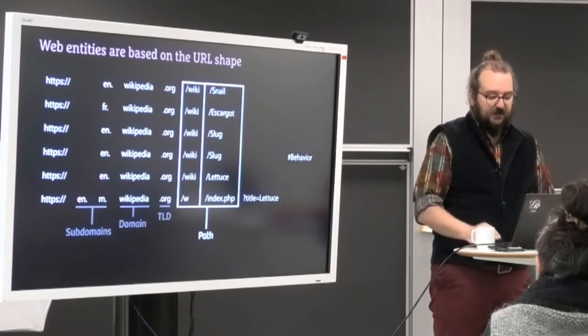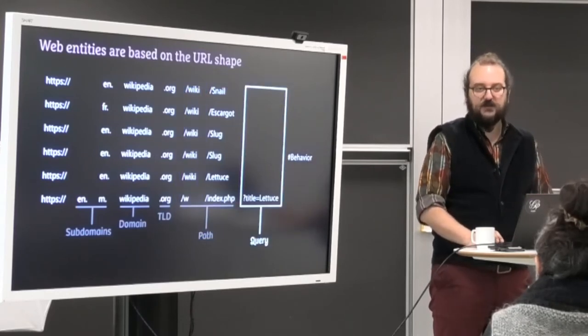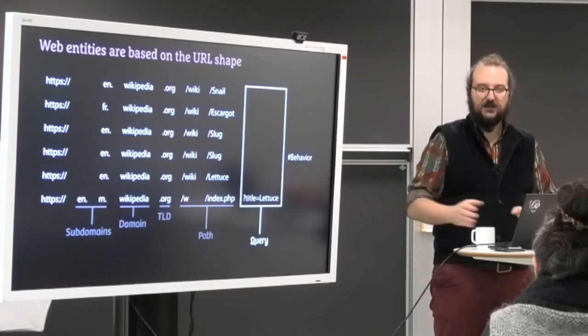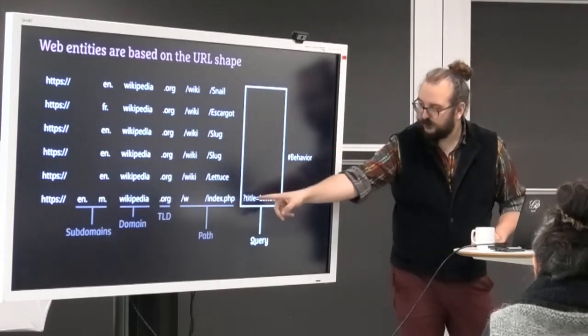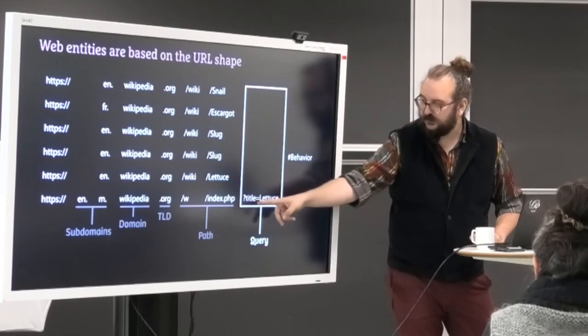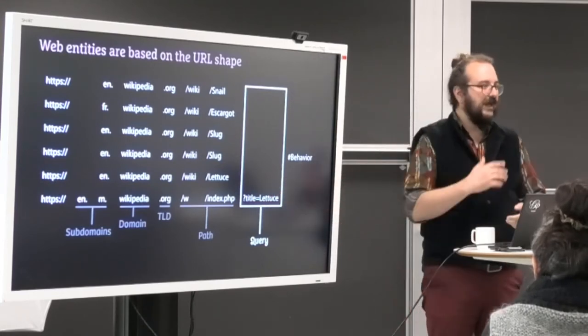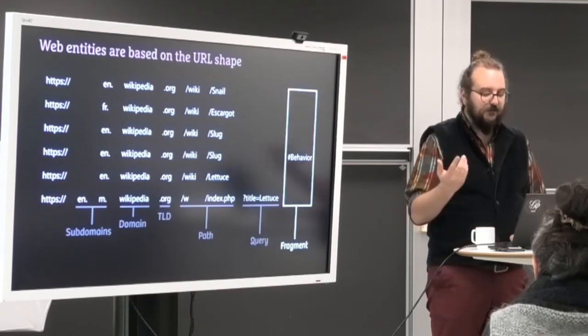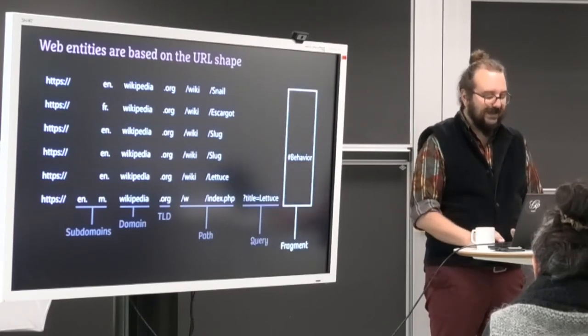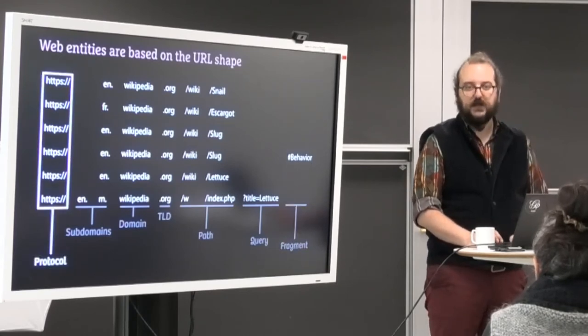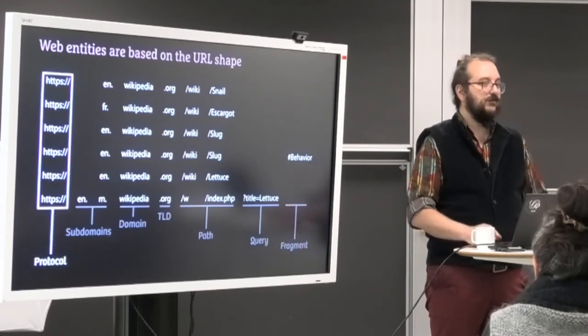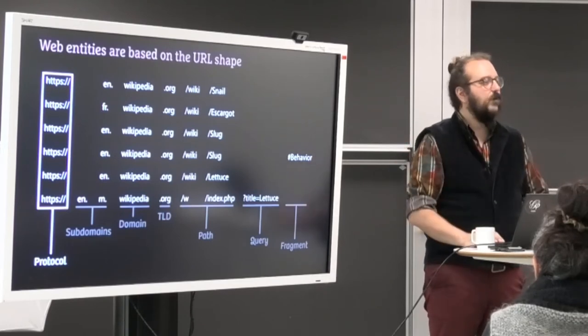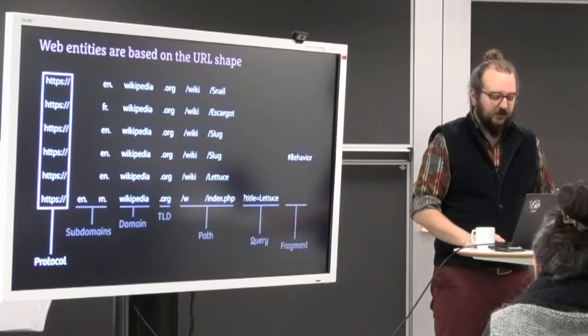And then you have other stuff like the query. This is typically what you have when you can type whatever. So in Google, when you type your query, it goes in a path that is like that with a query mark, a question mark and something. Sometimes you have hands and stuff like that. It's like a little piece of code inside your URL. And you can have what we call the fragment, which is the internal links. And you also have the protocol, right? It can be HTTP, HTTPS. You have other protocols on the internet, FTP, whatever. Let's forget about the protocol here.